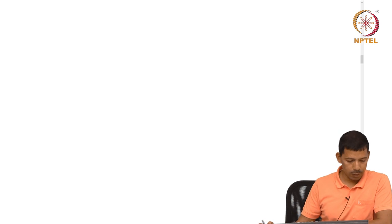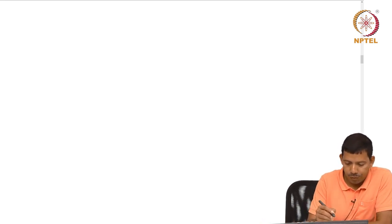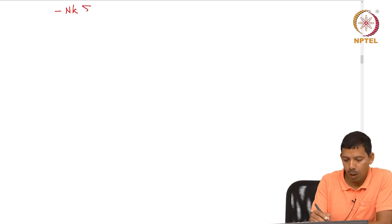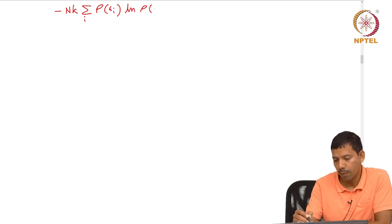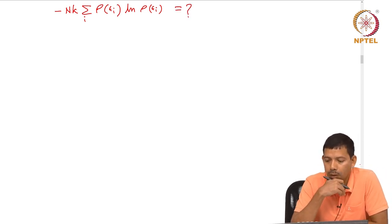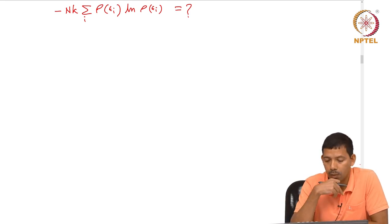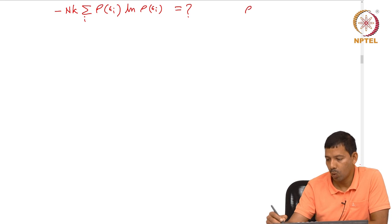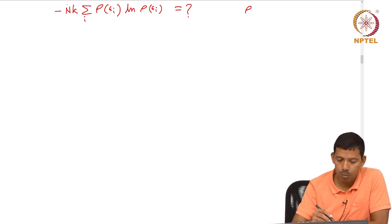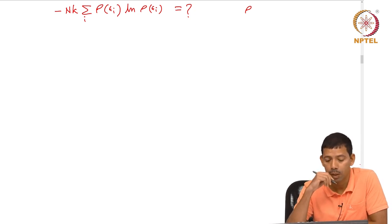Now, this is a very important relation. If I ask you, what is minus Nk sum over i of ρ(εᵢ), where ρ is the probability which we have defined before. What does this expression correlate to? What thermodynamic quantity does this expression relate to? As I defined before, capital N and small n are the same thing — the total number of particles.